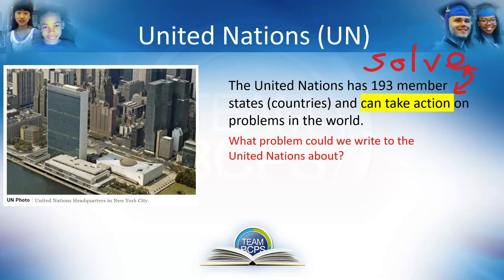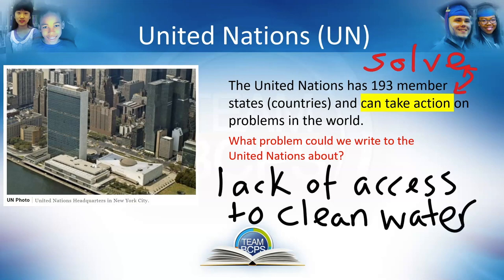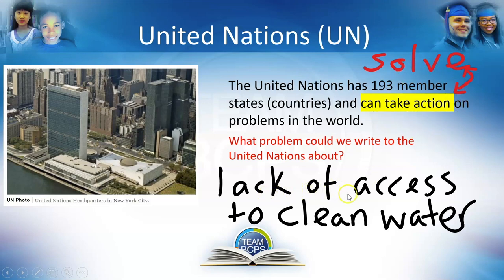What problem could we write the United Nations about? Do you remember the last lesson, lesson number six? What was the problem? Lack of access to clean water. Remember, we looked at different countries in the world. The average person in the United States uses 156 gallons of water a day. But in Mali, the average person only uses around three gallons of water a day, because they have lack of access to clean water.